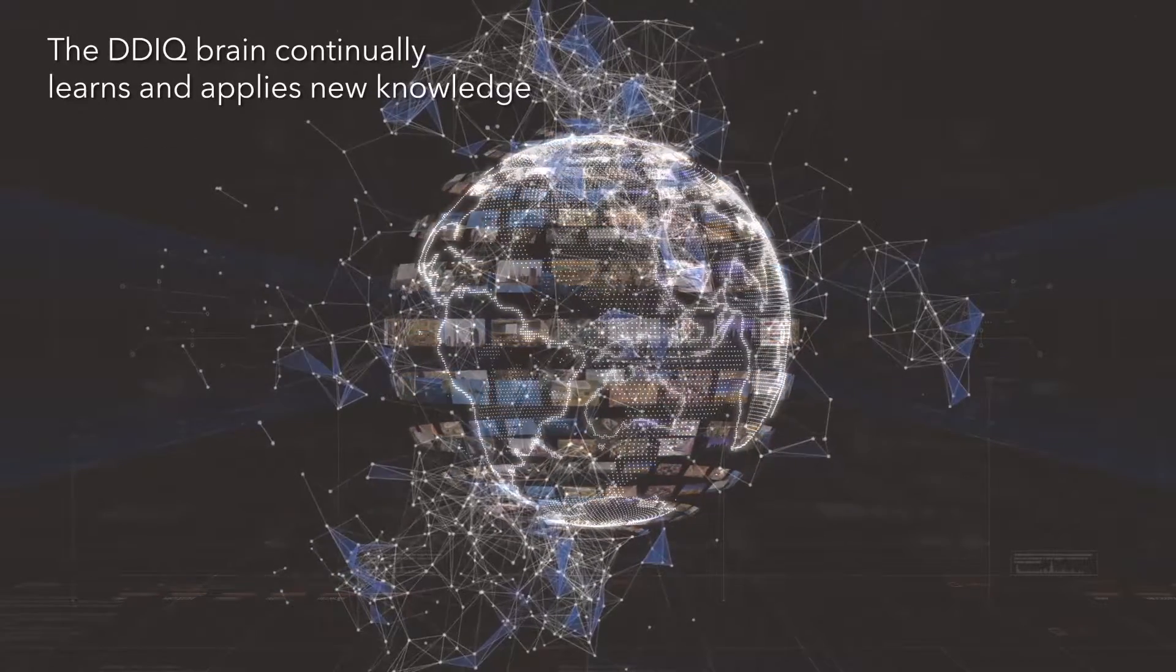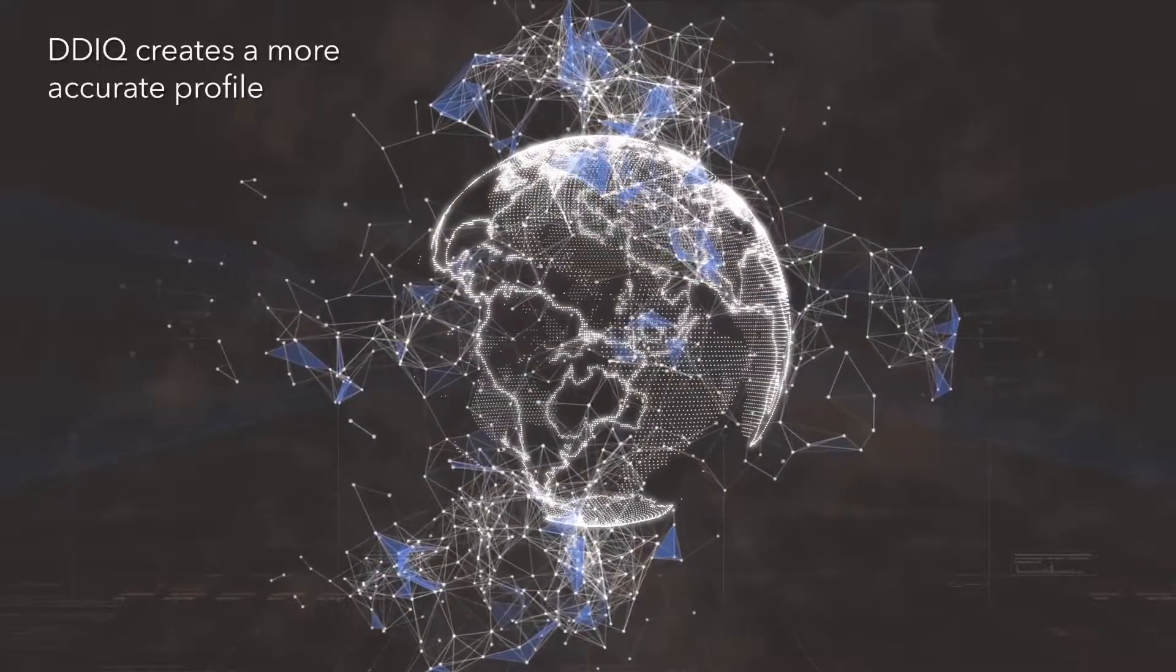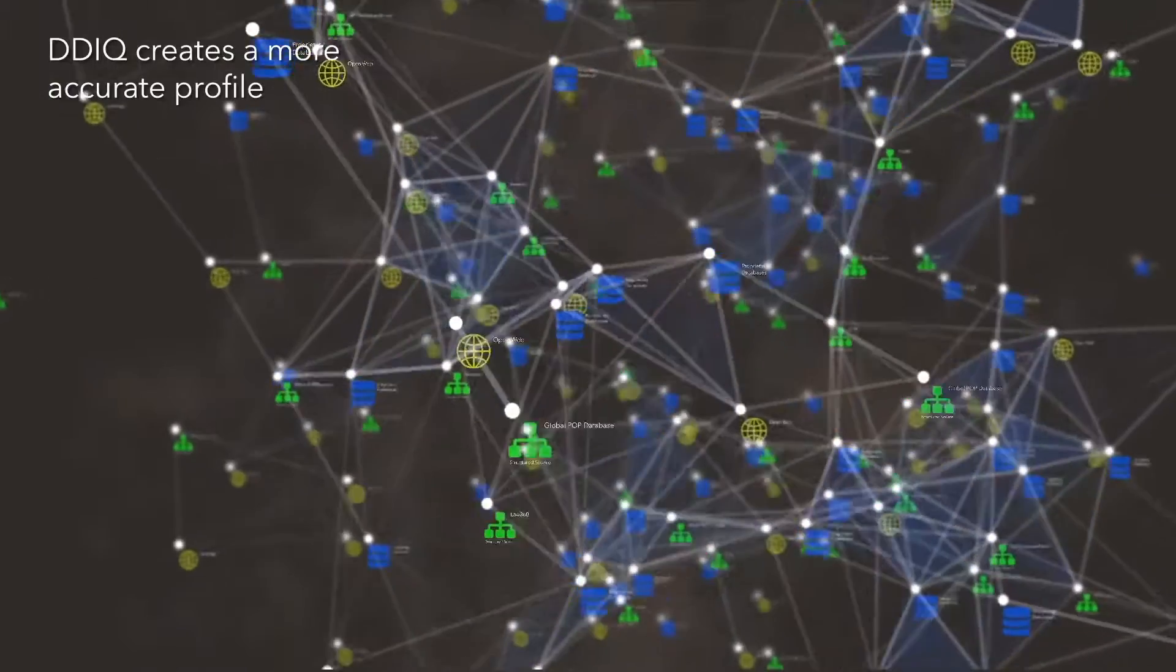The DDIQ brain continually learns and applies new knowledge through your search to create an organized profile with fewer false positives or extraneous results.